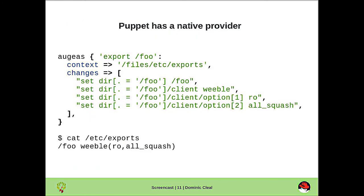If you're a Puppet user, you may already have seen the Augeas resource type. This maps onto the API, and in this example we're creating a new NFS export. We use the same set commands we would do in augtool, and we set various nodes and sub-nodes beneath the entry.